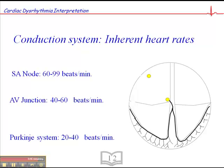Now, when I say inherent, that doesn't necessarily mean that junctional rhythms will always fire at 40 to 60, or ventricular impulses will always fire at 20 to 40. Those are just the inherent rates.